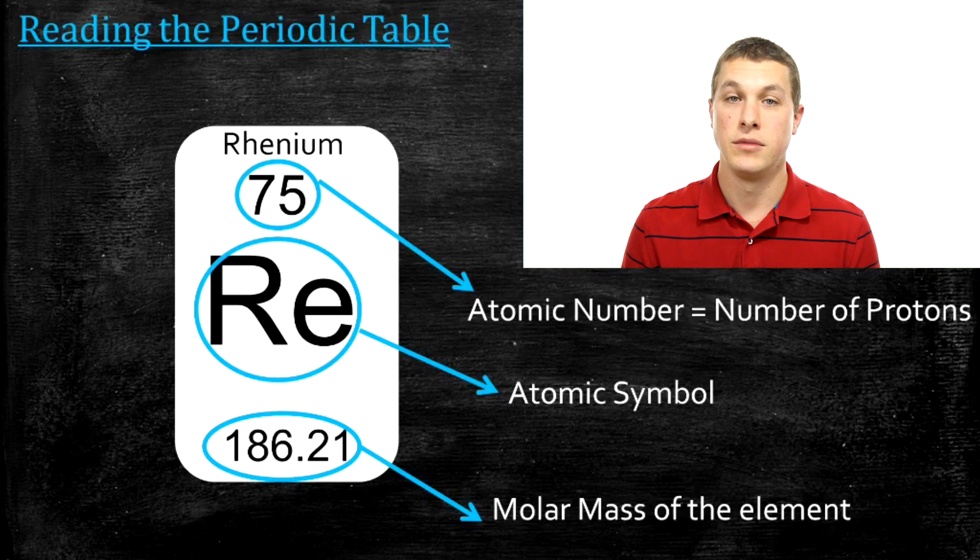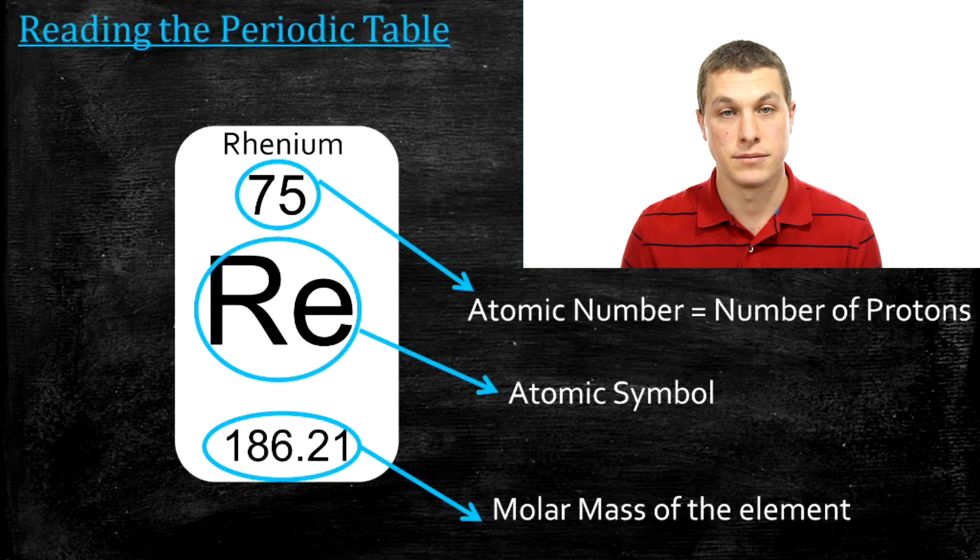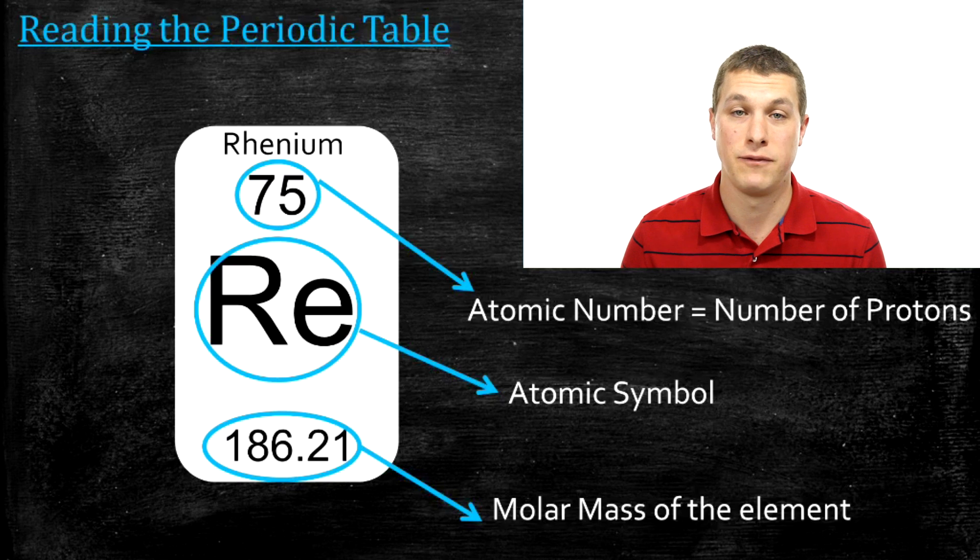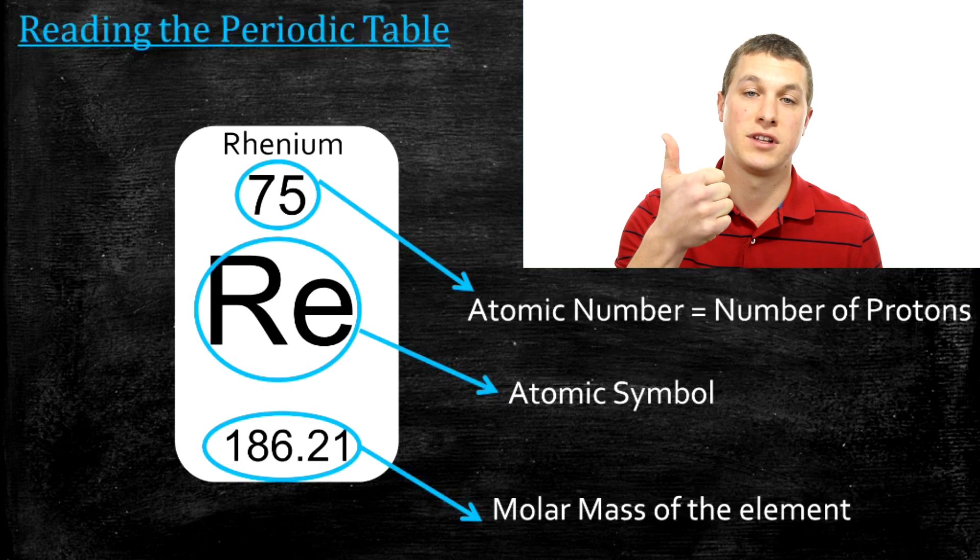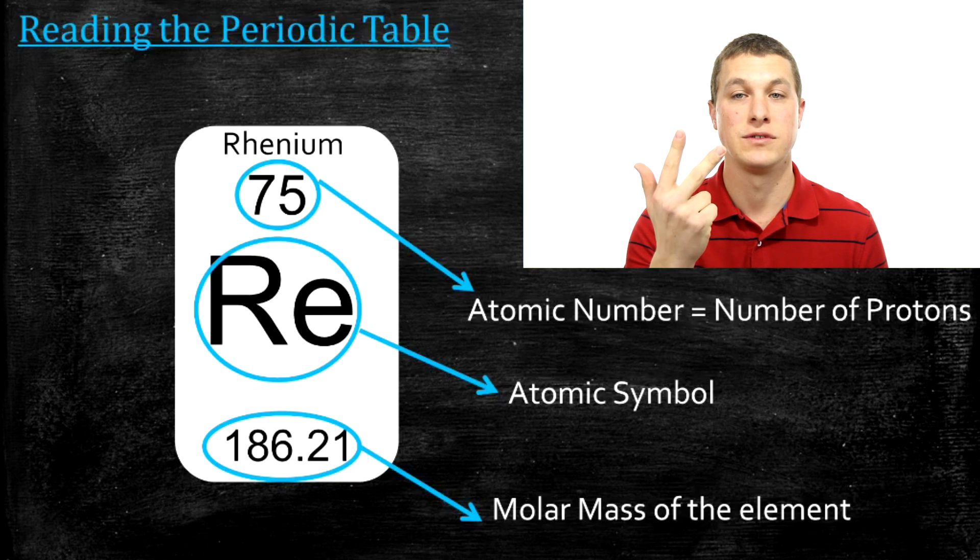At the very bottom, we have the molar mass. That is, the mass of a mole of those atoms. That is, the mass of a very large number of those atoms. So the periodic table provides a catalog of information. And the most important things it provides is the atomic number, which is the number of protons, the chemical symbol, and the molar mass, a measure of how heavy those atoms are.